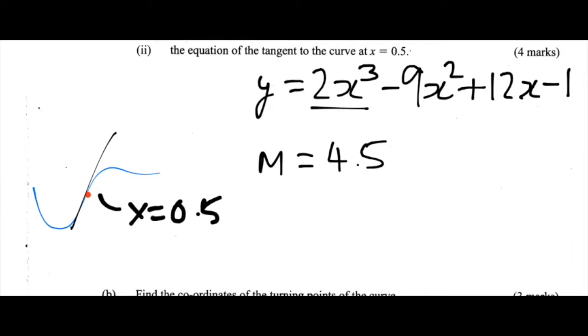We also know that the equation of a straight line is given by y is equal to mx plus c. We have our m value, that's this value here. We also have our x that's given to us in the question, that's 0.5. All we need to work out now is y and c.